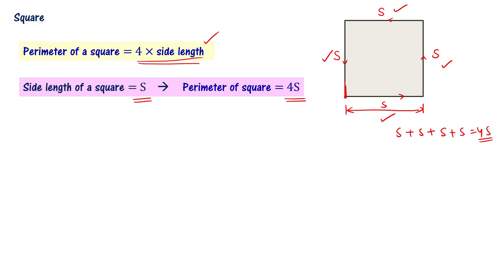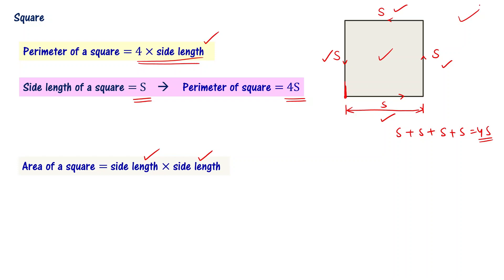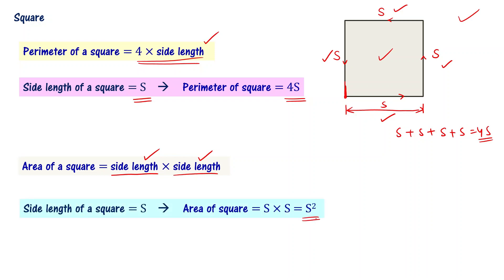Another parameter of interest is the area of the square. Area of the square is defined as side length times side length — that is, what area does this square cover on the board? It is defined as side × side. If the side length is S, then the area of the square is S × S, which can be written as S squared. So: perimeter of the square is 4S, and area of the square is S². Please note this.